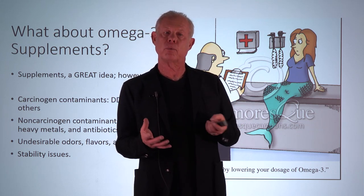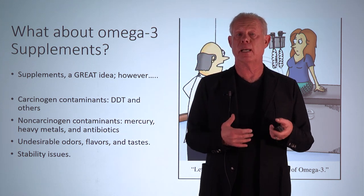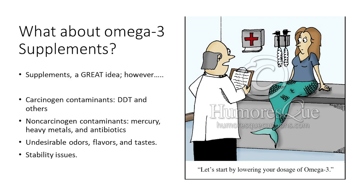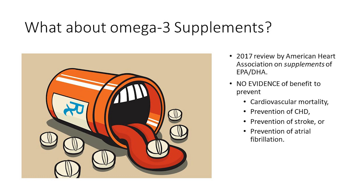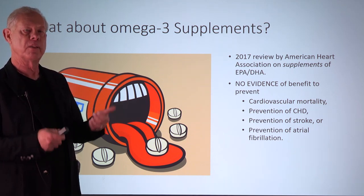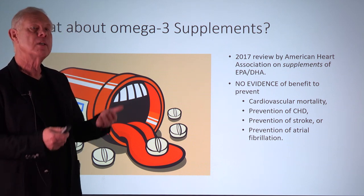What about supplements? Supplements give you the actual active metabolite — DHA and EPA. However, they come with contaminants: mercury, heavy metals, antibiotics, odors, flavors, and stability issues. A 2017 American Heart Association review found no evidence of benefit for preventing cardiovascular mortality, heart disease, stroke, or atrial fibrillation from fish oil supplements. Throughout our omega-3 discussion, supplements didn't work for heart disease, Alzheimer's, dry eye, or AMD — fish helped, supplements didn't. Fish works, supplements don't.